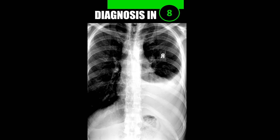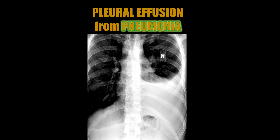Case number four: this is a good example of pleural effusion — in this case from pneumonia. There's blunting of the costophrenic and cardiophrenic angles, and this entire shaded region represents the fluid accumulation from the pneumonia. Compare the involved right side to the normal left hemidiaphragm and you should be able to see the abnormality.